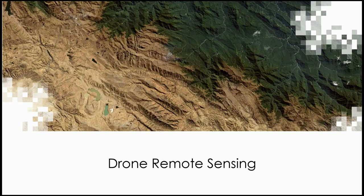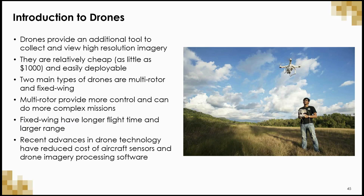One important technology that has really been gaining a lot of momentum recently is drone remote sensing. Drone remote sensing is when a camera or sensor is mounted on a drone and used to collect imagery. Instead of having to rely on a government or large company to launch a satellite, anyone can do it themselves for a price as low as $1,000. There are two different types of drones: multi-rotor drones, which function similar to helicopters and provide high levels of user control for complex precise missions; and fixed wing drones, which function similarly to airplanes and have less control but longer flight times and larger ranges. Recent advances in drone technology have reduced the cost of aircraft sensors and drone imagery processing software significantly.